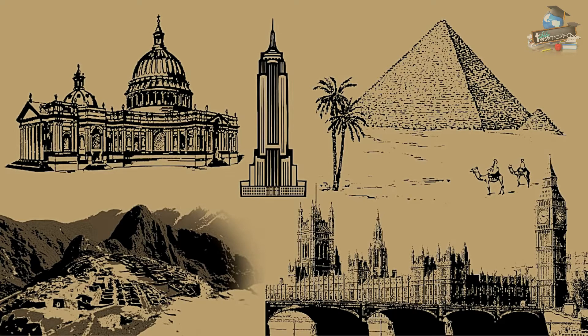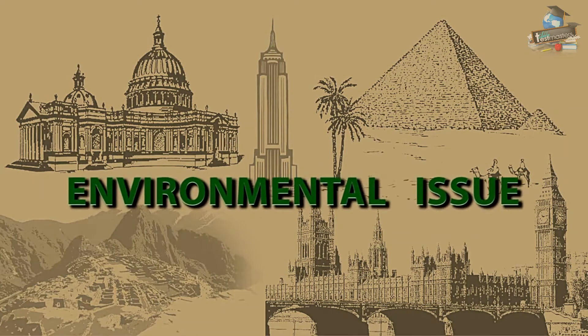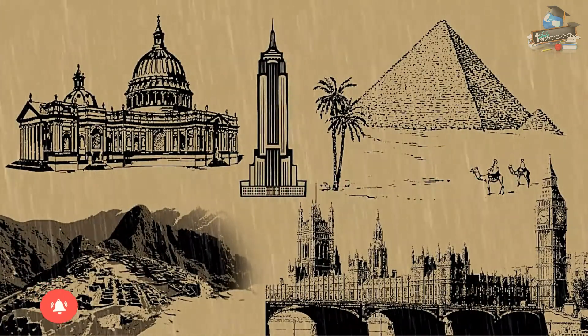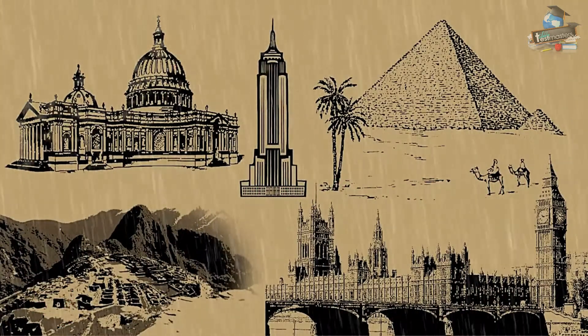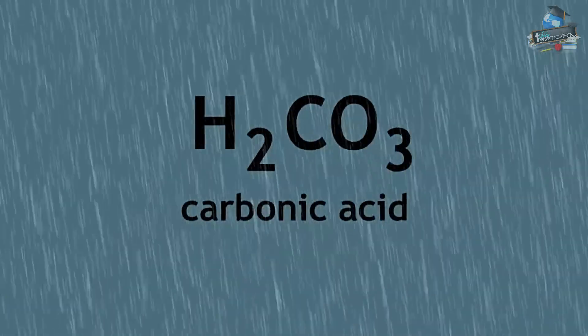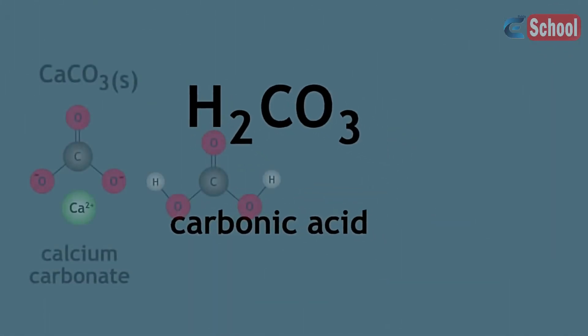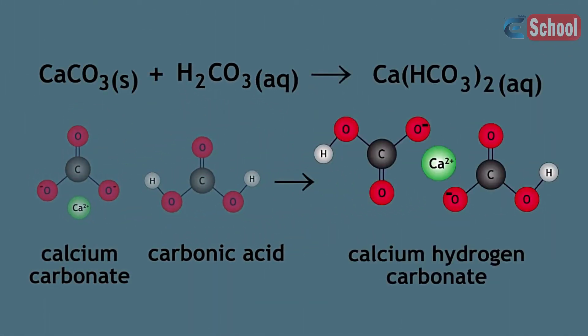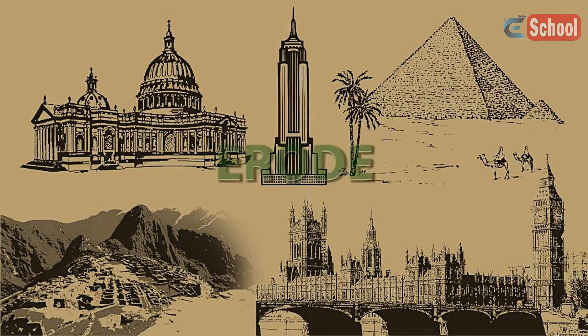There is, however, a fairly recent major environmental issue. Acid rain is slowly eroding these and many other limestone structures. One of the acidic components of acid rain is carbonic acid. Calcium carbonate reacts with carbonic acid to give calcium hydrogen carbonate, which is soluble in water. As a result, these limestone structures erode.